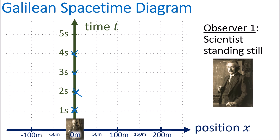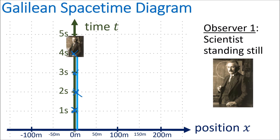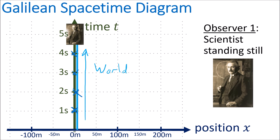So in this spacetime diagram, an observer who is standing still will simply travel in a vertical line. They are traveling through time, but they are not traveling through space. This path that the scientist follows in the spacetime diagram is called his world line.